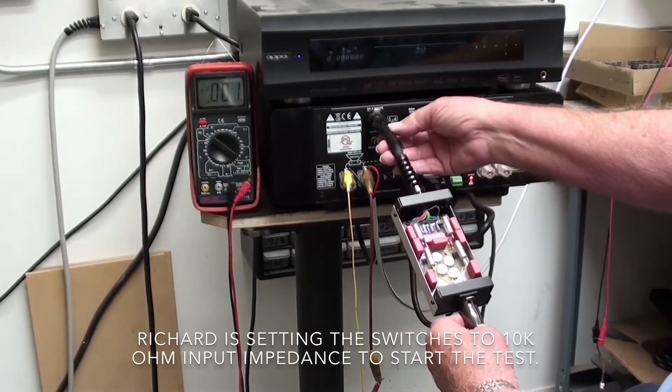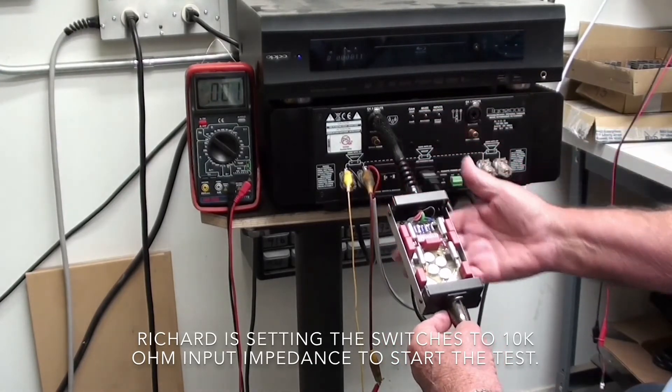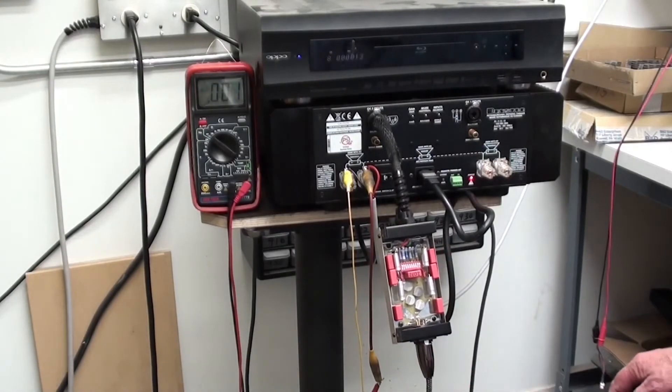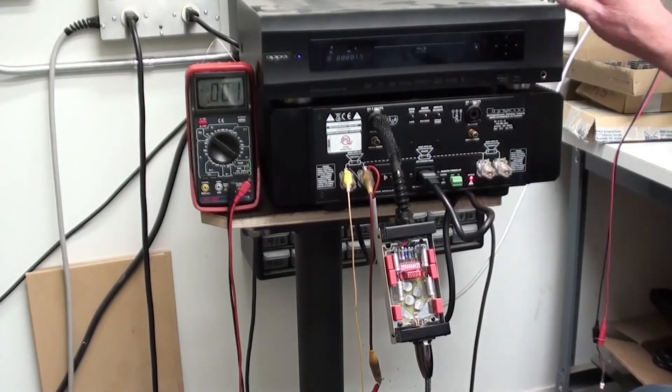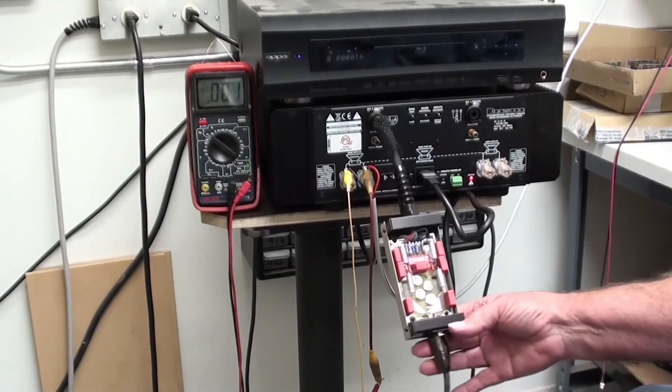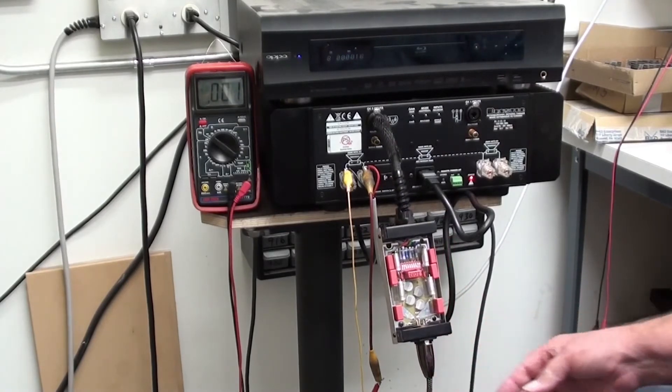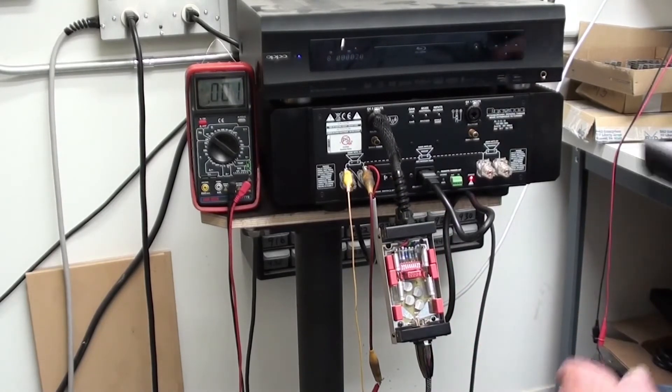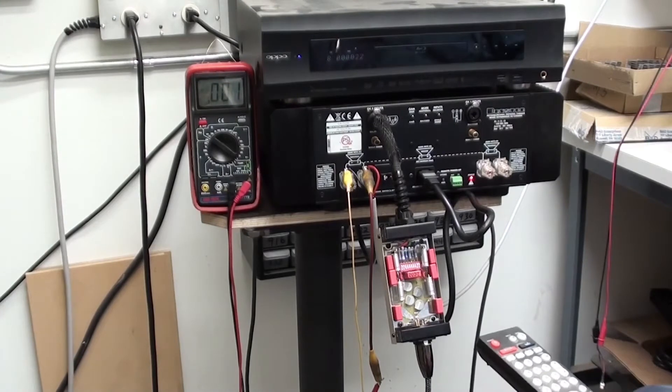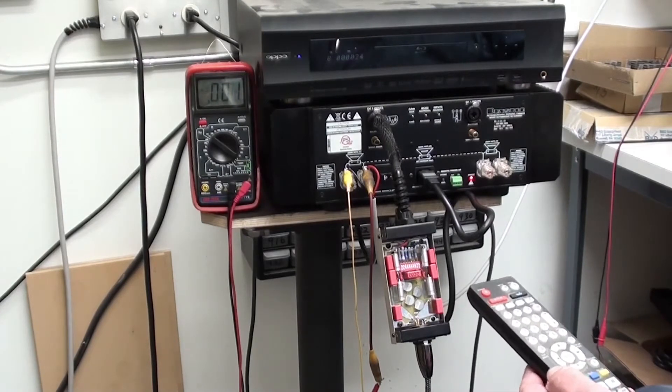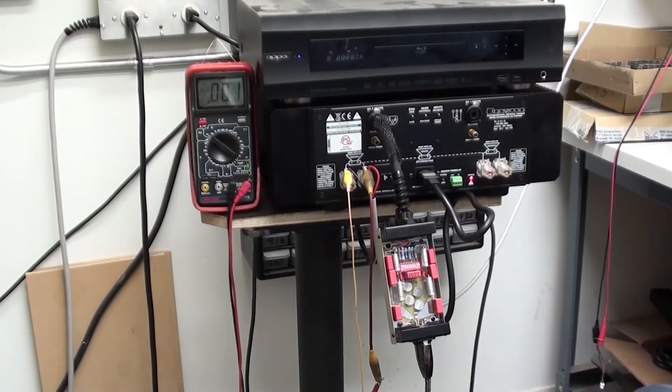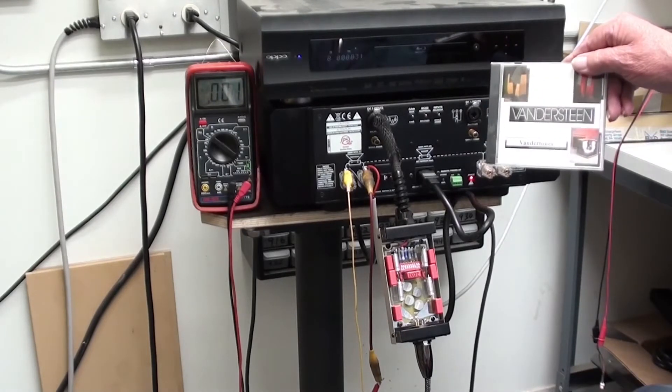We have the high pass installed to the input. In this case, it's balanced. And the output from the CD player is going into the input of the filter. The first thing we do is play track 27, which is the 1000 Hz track on the Vandertones disc, which is also required to do this.